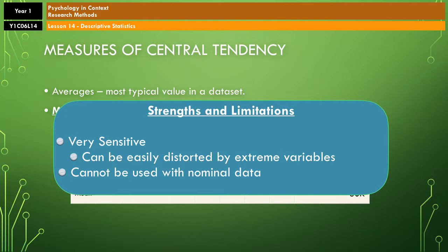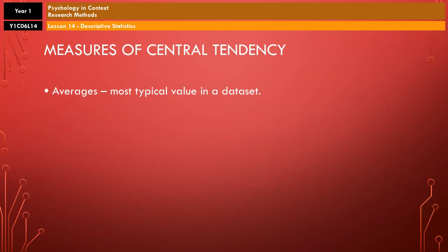So, moving on to our next measure of central tendency, we've got what's known as the median. Now, the median is, quite literally, the middle value in any data set. What you would need to do is get your data and order it, first of all, from smallest to largest. And then, you quite literally just work your way from the outside in, crossing off the numbers as you go, until you hit the middle.